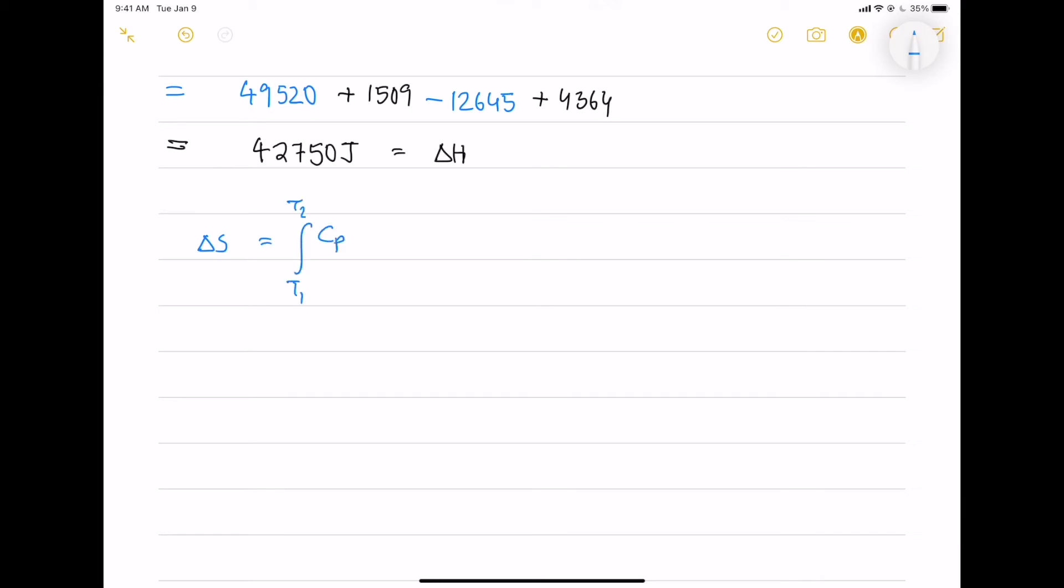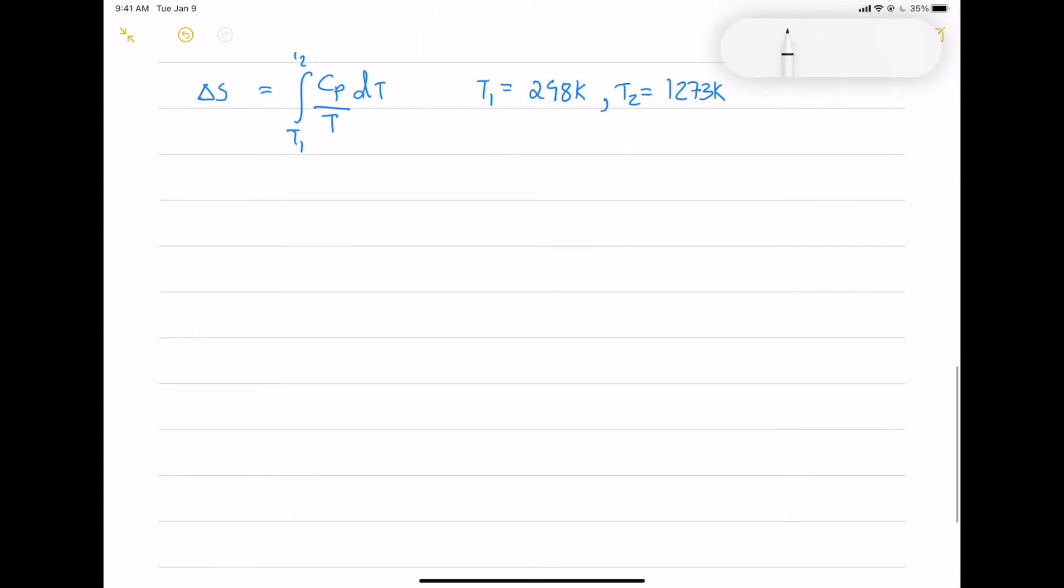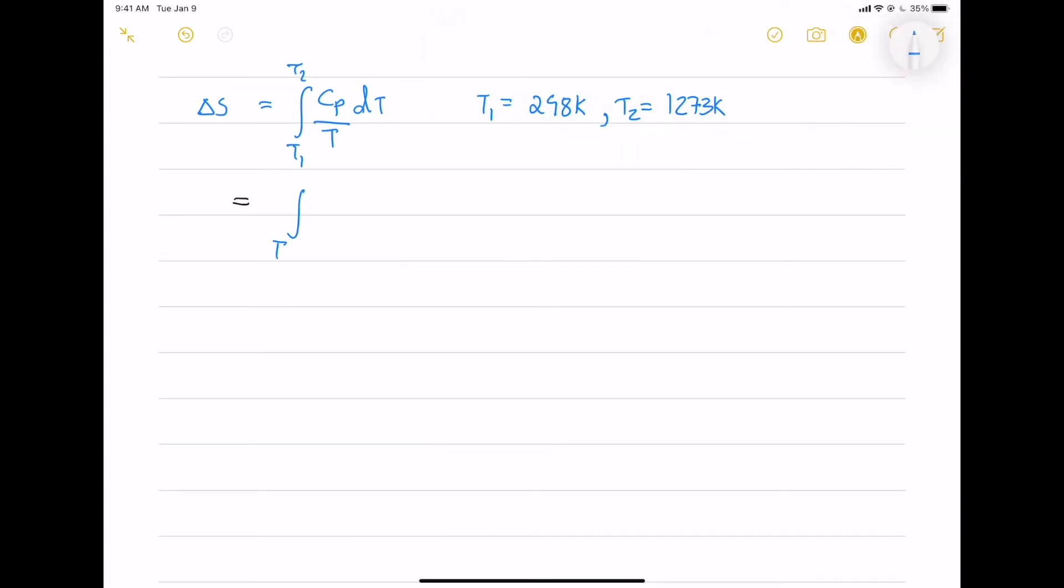Now, for the delta S, as you know, it is integral q by t and q is delta H. So, CP dt by t. First we write down the CP by t. I divide the CP with temperature t. So, you will have this expansion after dividing the CP with t.